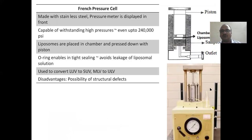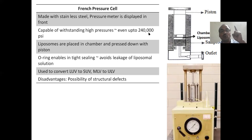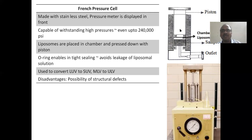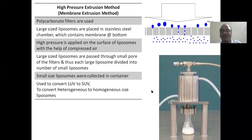The French pressure cell method: we use a piston and a chamber to place the liposomes. High pressure — even up to 240,000 PSI — is applied. That is why the chamber is made of stainless steel, because it has to tolerate that much pressure. Automatically, big liposomes are converted under pressure and come out through a small orifice, producing very small outlet liposomes.